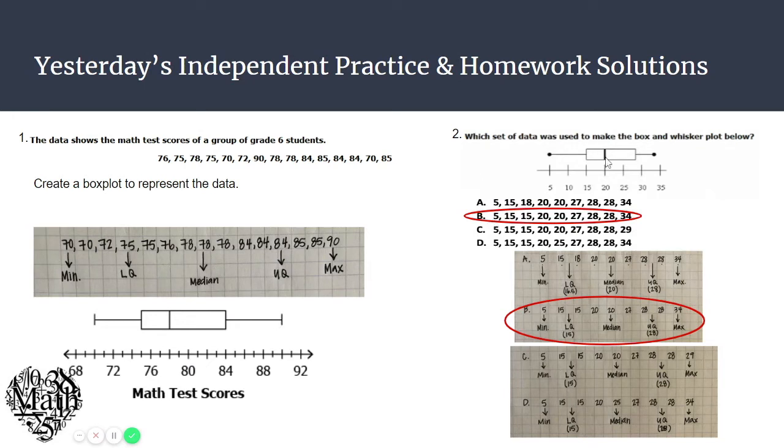Question number two, you were given the box and whisker. You needed to figure out which of the data sets represented that plot. The answer was B. So when you put those numbers in order, the lowest number, also called your lower extreme or minimum, was five. Your lower quartile came out to be 15, which is right here on the graph. Your median was 20. Your upper quartile was 28. And your maximum was 34.